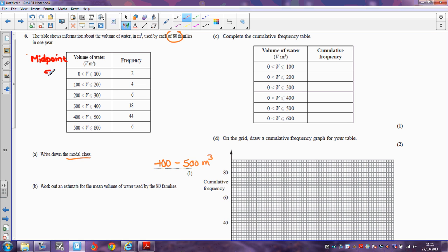So the midpoint of the first group is going to be 50, 100 to 200, well that's 150, 200 to 300, 250, 3 to 400, well that's 350, 400 to 500, well that's 450, and 500 to 600 is 550. Now I'm going to call that my X column.